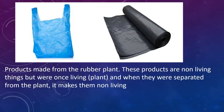In the picture we have products made from rubber plants. These products are non-living things but were once living — that is, they were part of the rubber plant. When they were separated from the plant it makes them non-living. The rubber was taken out and went through a process to reach its final stage, making it a non-living thing; however, it has once lived.